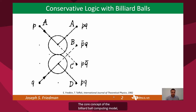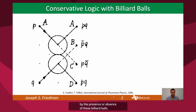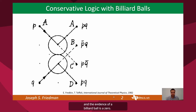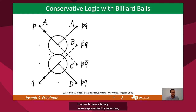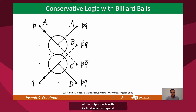The core concept of the billiard ball computing model is that binary signals are represented by the presence or absence of these billiard balls. The presence of a billiard ball is a one, and the absence of a billiard ball is a zero. Here we have input ports P and Q that each have a binary value represented by an incoming billiard ball or a lack thereof. Each entering billiard ball reaches one of the output ports with its final location dependent on the presence or absence of a billiard ball at the other input.